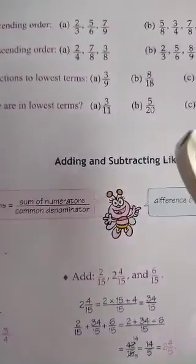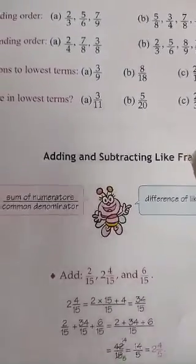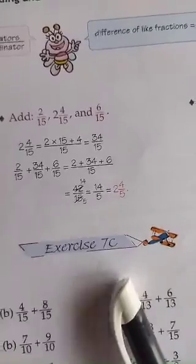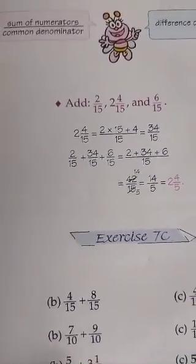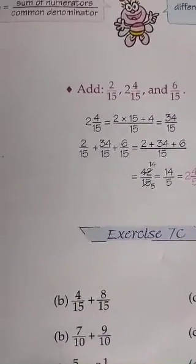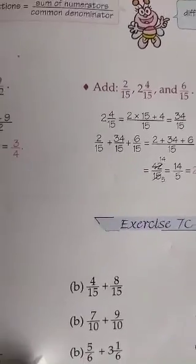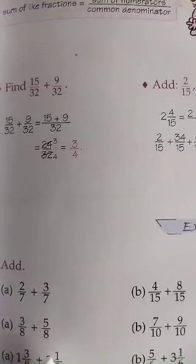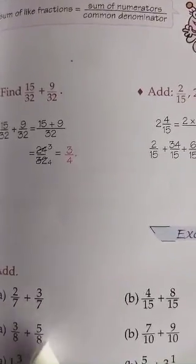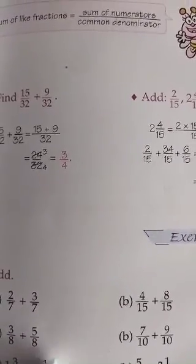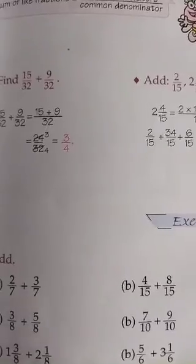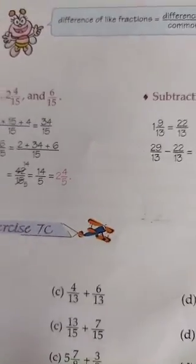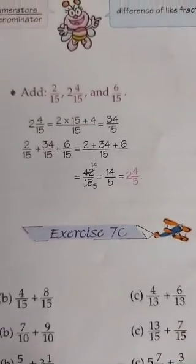This is your homework. Now coming to the next exercise: Exercise 7C. In this you have to add or subtract fractions. If the denominator is the same, there is no need to take the LCM — just add the numerators and keep the denominator as it is; that will be your answer. All questions in Exercise 7C are of this type only.